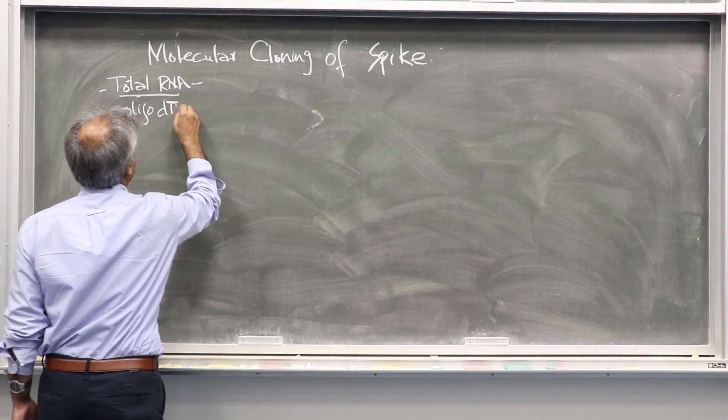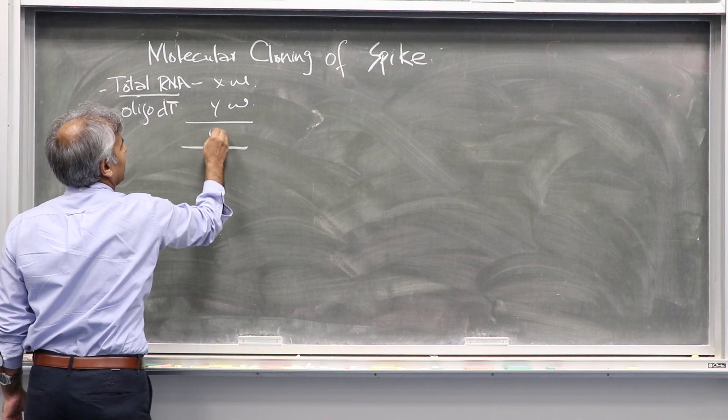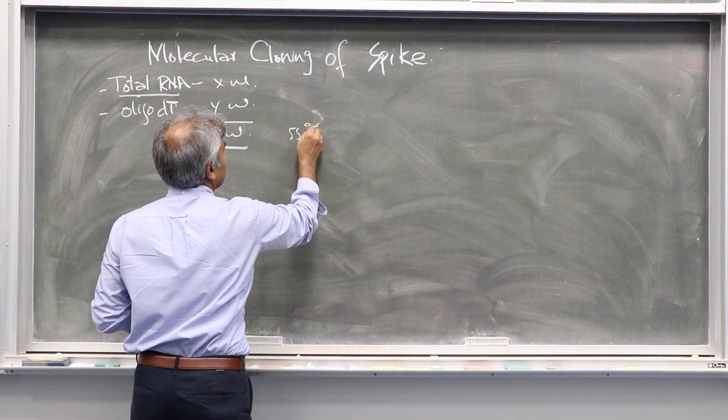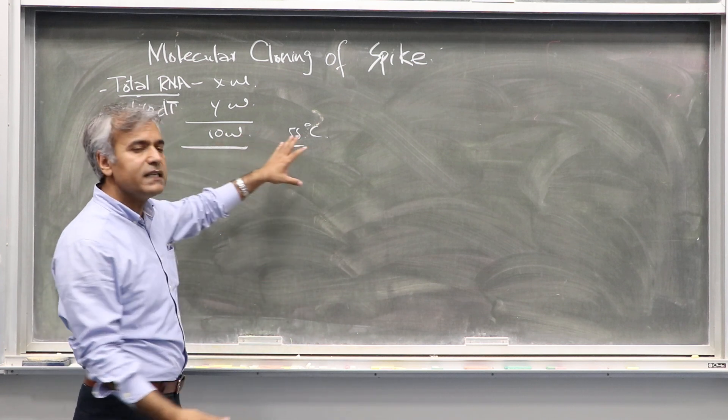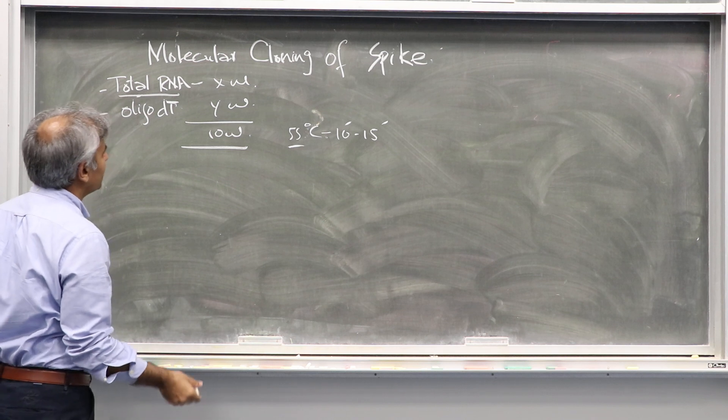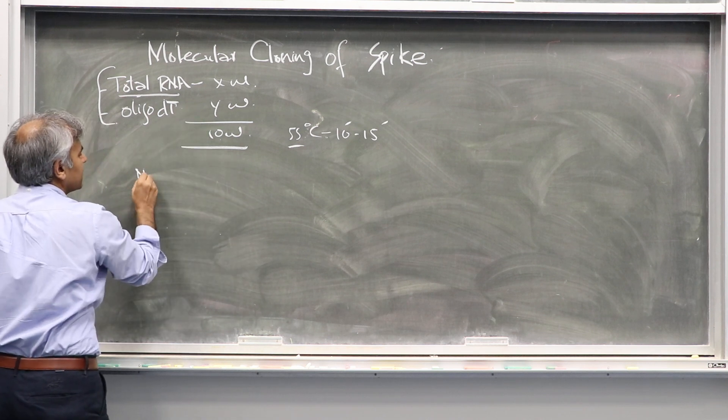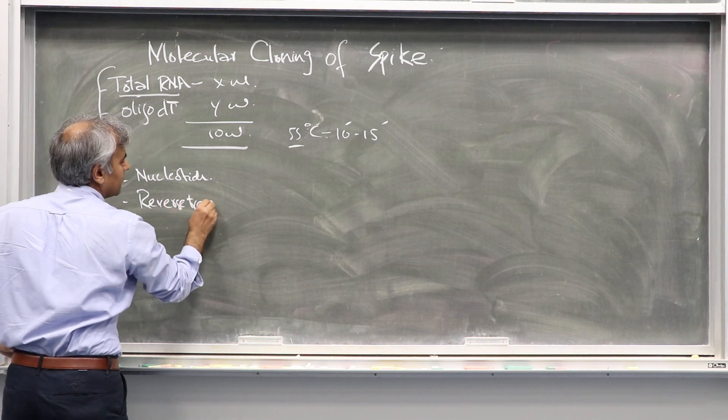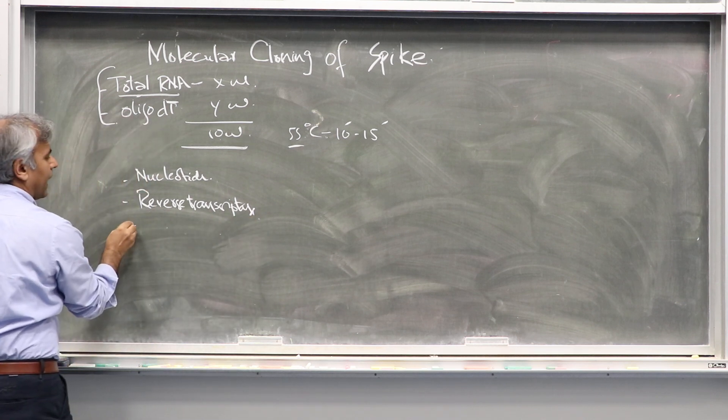So let's say we took oligo-DT primers. So let's say we took oligo-DT primer, you have the total RNA, oligo-DT, and you mix x microliter, y microliter, the total reaction is usually 10 microliter. Here, you heat everything at 55 degrees Celsius or so, so that any of the messenger RNAs, if they have the secondary structures, they are broken and then primers easily can anneal and bind. After 10 to 15 minutes at 55 degrees Celsius, what we do, now in this mix, what we do, we start adding the nucleotides. We add reverse transcriptase.